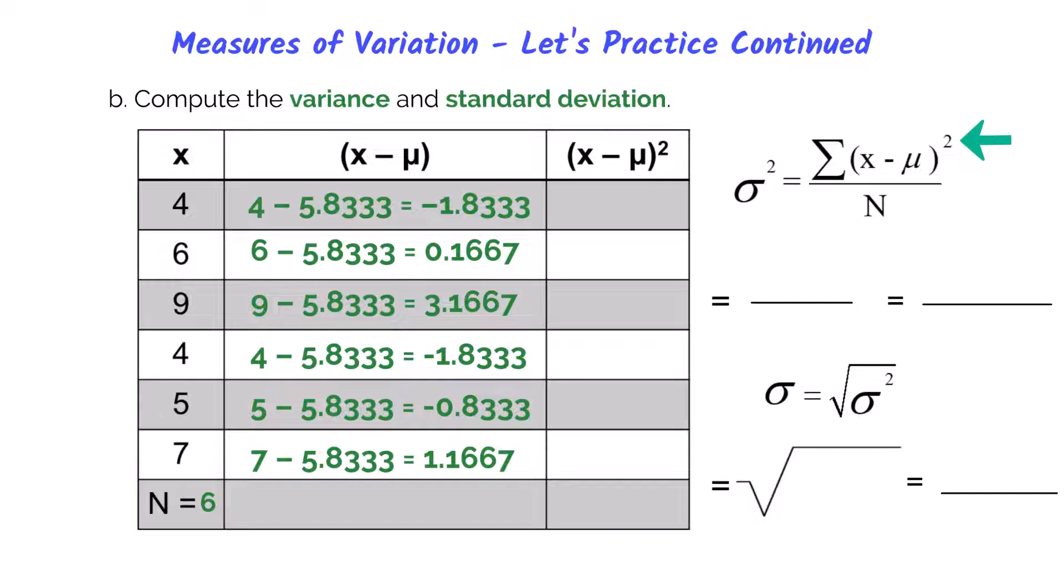Then the next step is to work through our exponents. So we'll take the numbers from the first column, and we're going to square each one. So for the first executive, we calculated negative 1.8333. If we square this number, we get 3.361. So watch out for those rounding differences if you're doing this in a calculator or Excel. So we'll go ahead and take the squares and the rest of the table down.